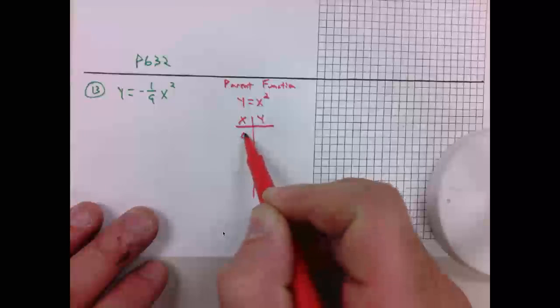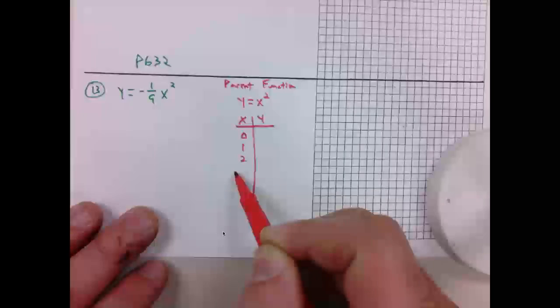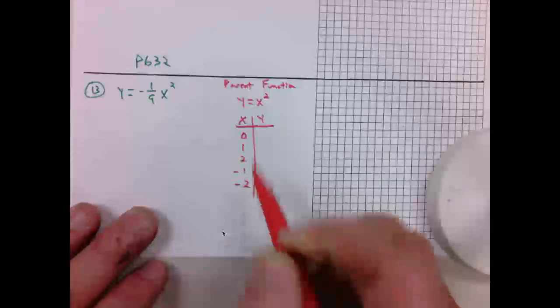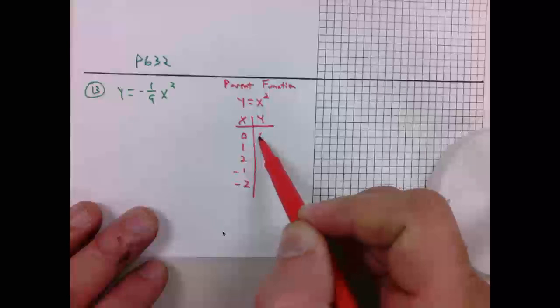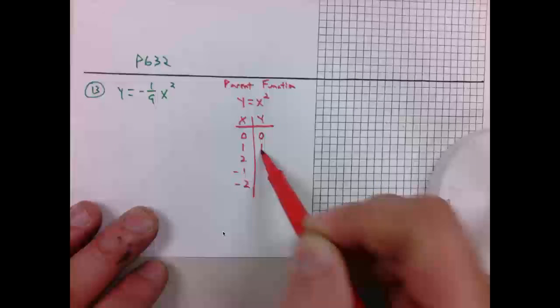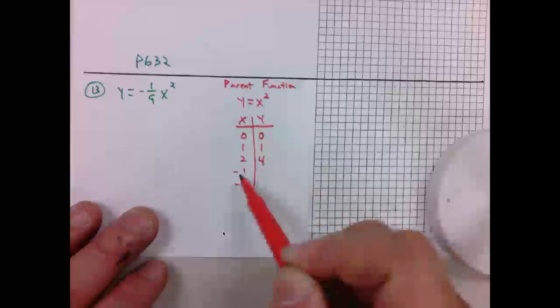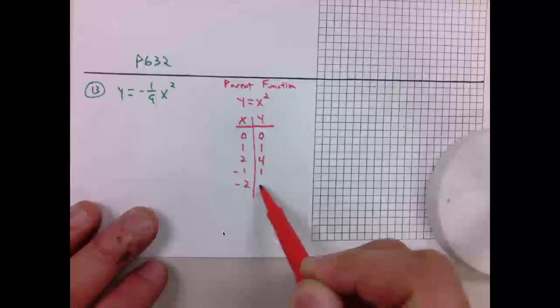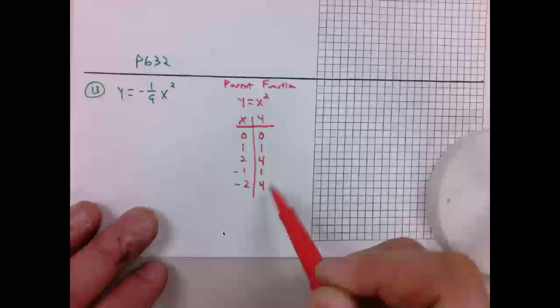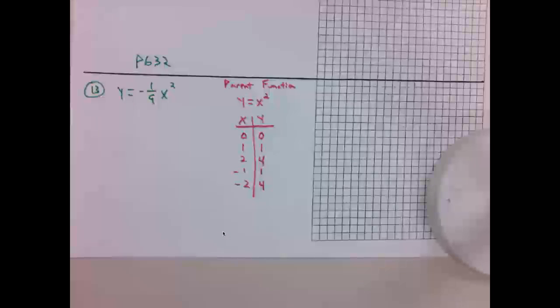I'm going to look at 0, 1, 2, negative 1, negative 2 for x. Our split screen table tells us 0 pairs with 0, 1 pairs with 1, 2 pairs with 4, negative 1 pairs with 1, and negative 2 pairs with positive 4. So we've seen this parabola already.